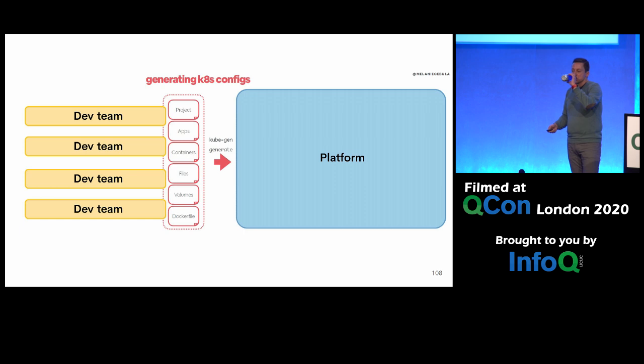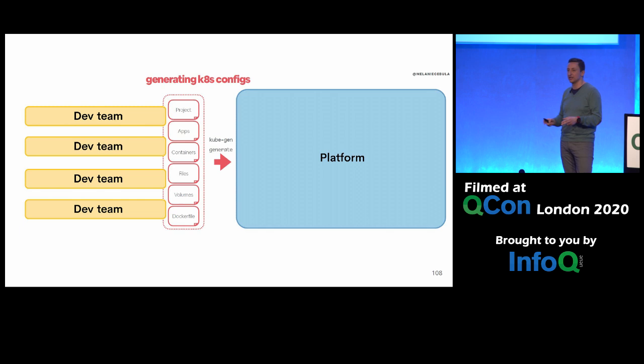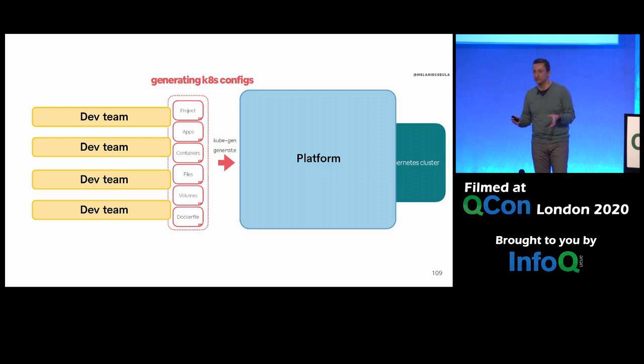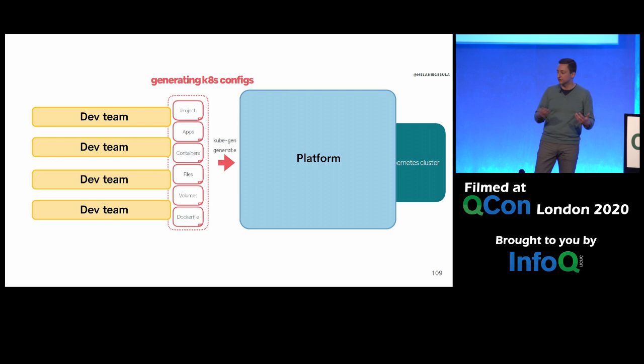This doesn't mean the platform hides everything away and development teams aren't allowed to understand what's going on behind the scenes. We still know it's a Kubernetes-based platform, and we should not disallow teams from providing feedback or suggesting new tools and approaches. We should promote that kind of engagement and discussion between stream teams and platform teams.